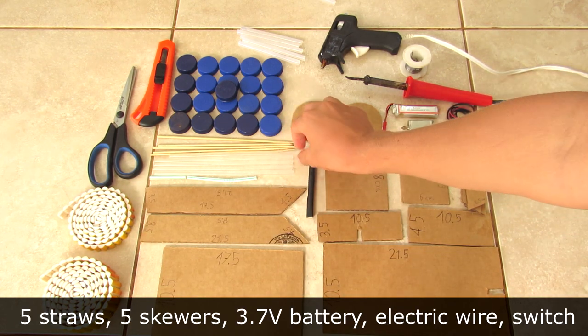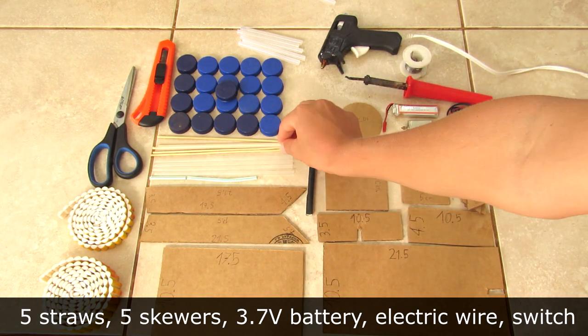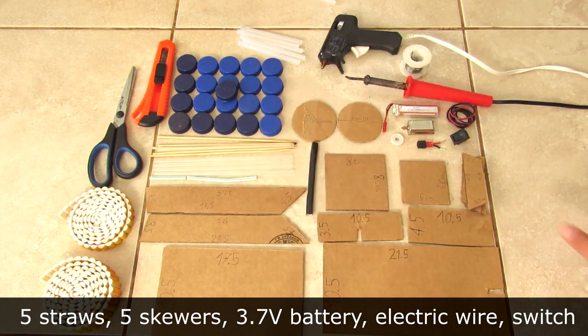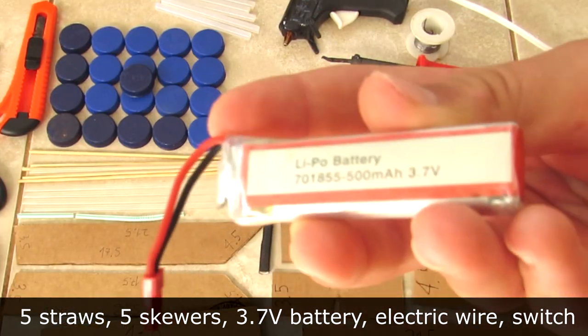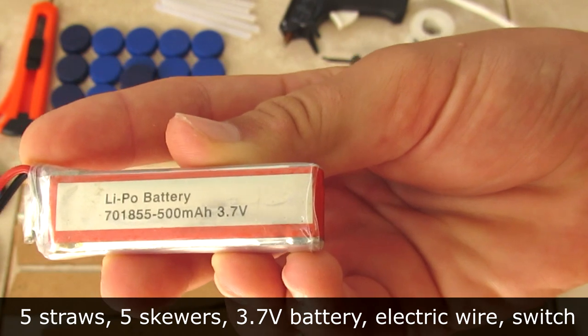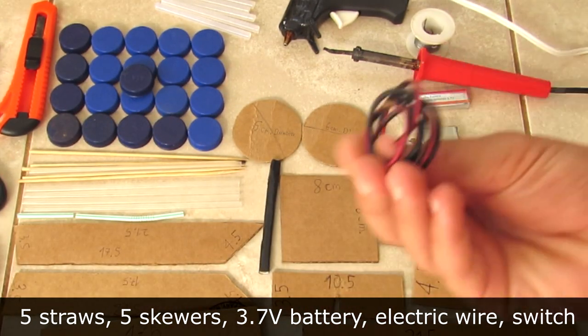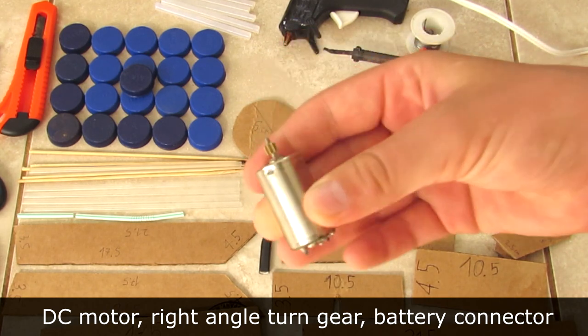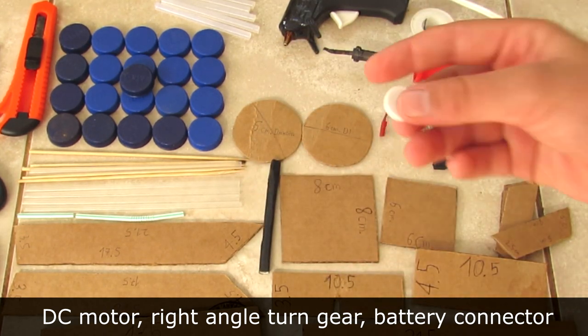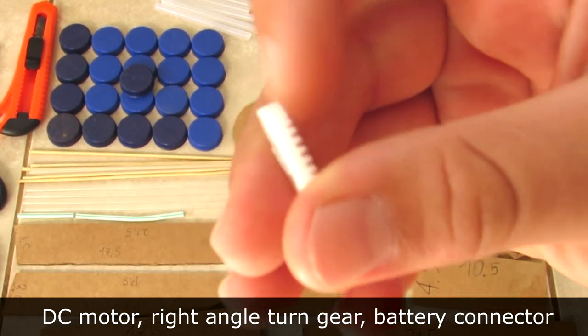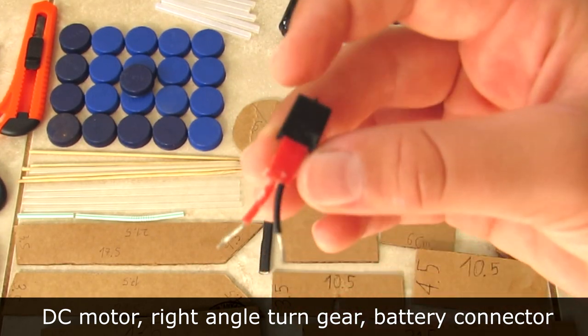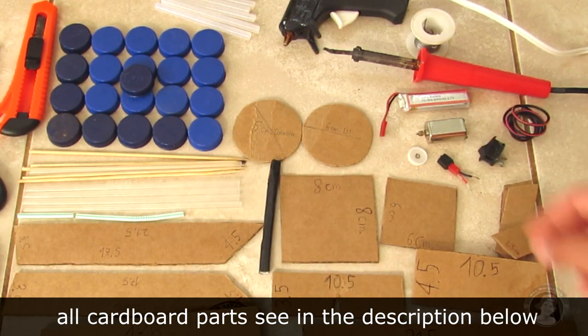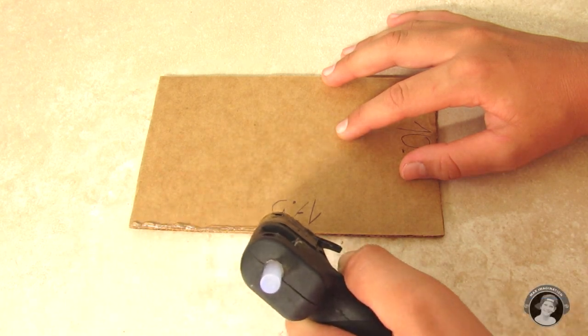A battery, lipo battery that's 3.7 volts, some wire and an on/off switch, a DC motor, a right angle turn gear, a battery connector. And all the cardboard parts are in the link in the description down below.